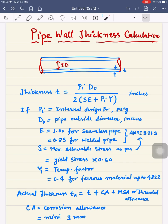Y is the temperature factor. Up to 482 degrees centigrade for ferrous material, you can use a value of 0.4. Once you calculate by putting all these values into the equation, you get a thickness in inches.